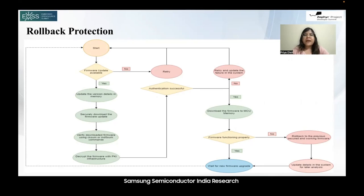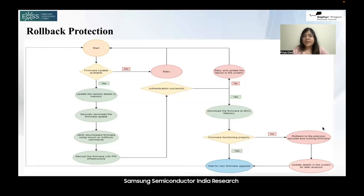There is a macro CONFIG_BOOT_UPGRADE_ONLY that controls how upgrades are performed. If this macro is unset, MCU boot uses a swapping algorithm to exchange the new upgraded image with the old image, allowing an easy revert if the image is not booting. If this macro is enabled, the image will override the old image, and if the new image does not boot, there is no fallback image. The major steps remain the same for the firmware upgrade process, but rollback protection provides an additional benefit of switching to the previous secure firmware image in case the new firmware downloaded is not working properly. Rollback protection in Zephyr RTOS guarantees that the device will only run on the latest and more secure firmware versions.